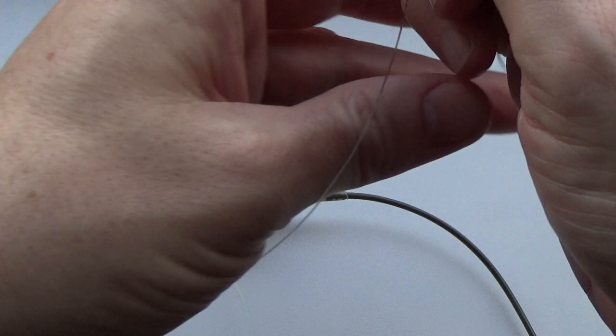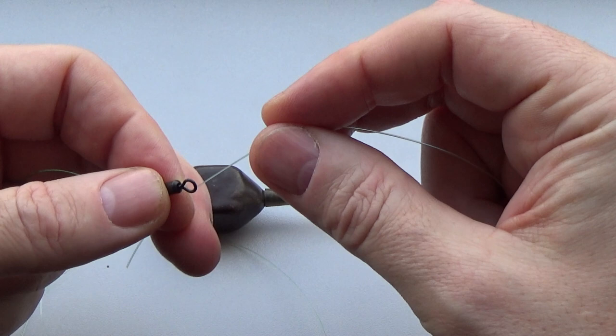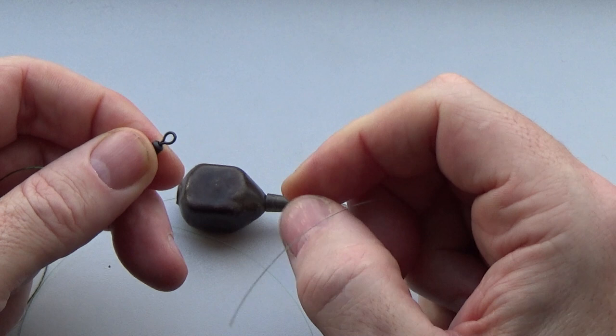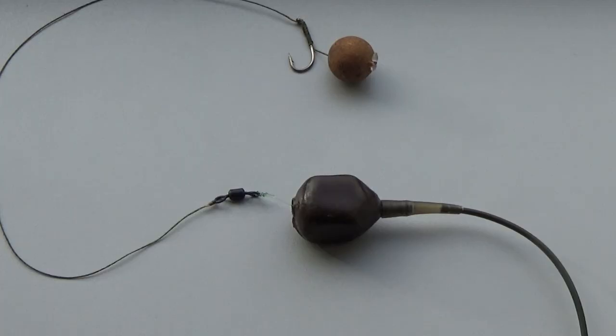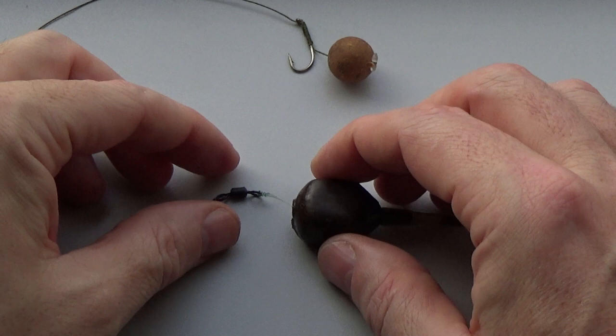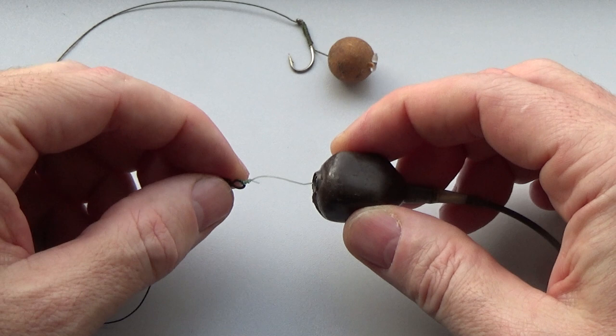And the last thing we do is we tie our rig on with our size 8 swivel that's going to fit in the housing. Now the knot I use for this is a Grinner knot. Okay, so as you can see, the rig's tied.